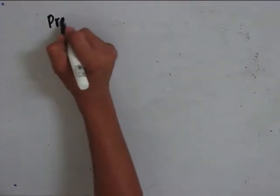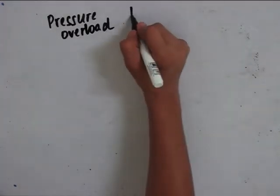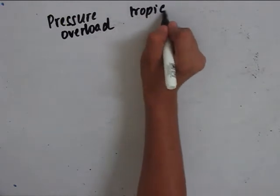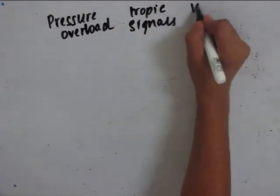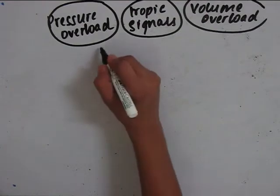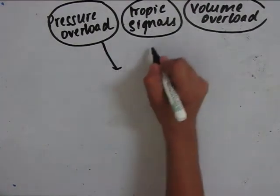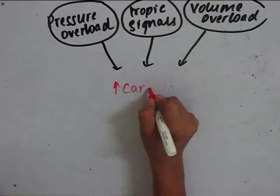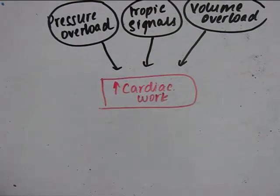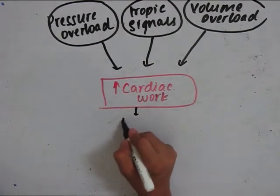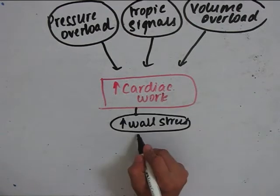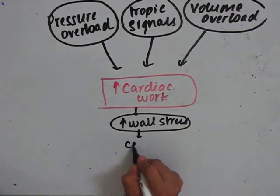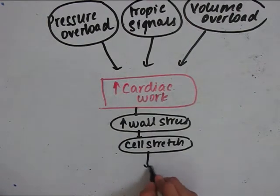Heart failure can be a result of pressure overload, trophic signals, or volume overload. Due to all these factors, there is increased cardiac work. Due to the increase in cardiac work, there is increase in wall stress, which results in cell stretching, which results in hypertrophy.